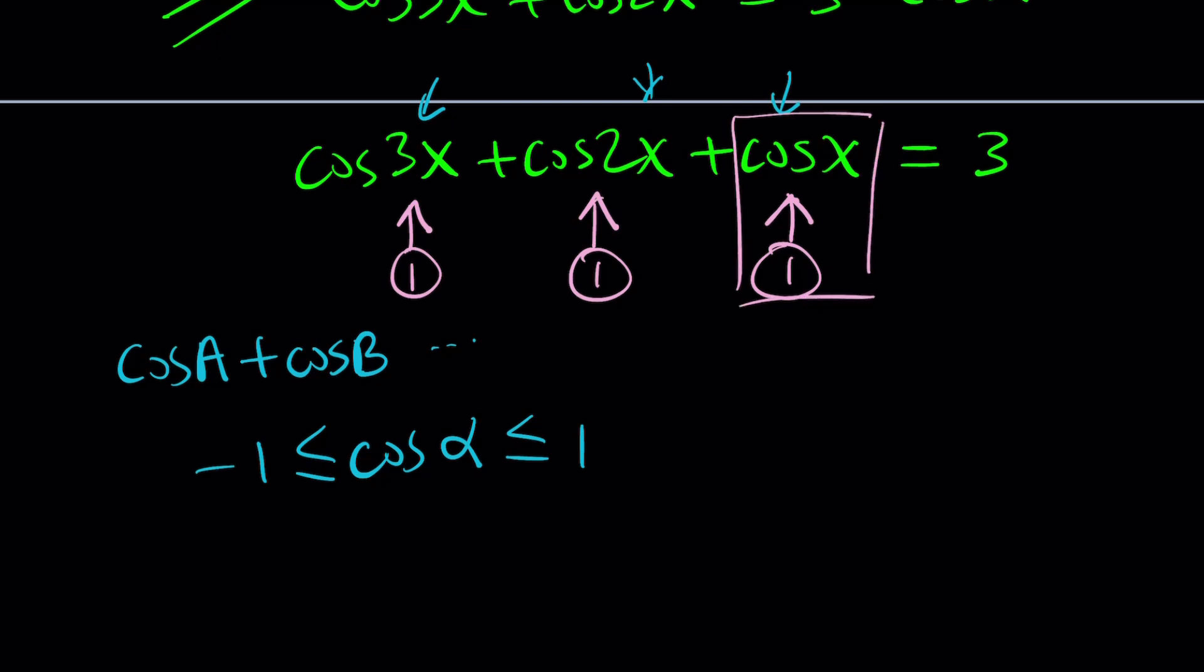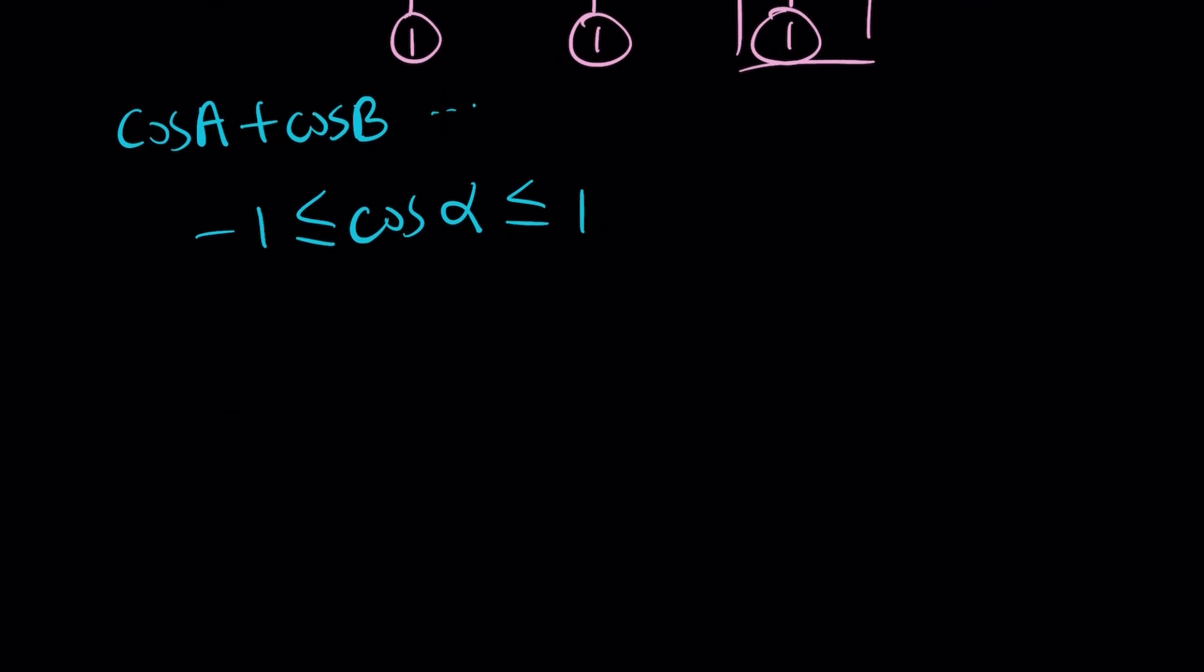But we also got extra things, such as cosine of 3x equals 1. Let's take a look at what it means. If cosine 3x is equal to 1, doesn't this imply 3x is equal to 2 pi k? And from here x becomes 2 pi k over 3, for k integers, right? But wait a minute, this doesn't work. Why? Because if k is equal to 1, for example, 2 pi over 3 is definitely not a solution.